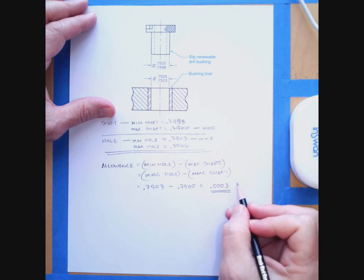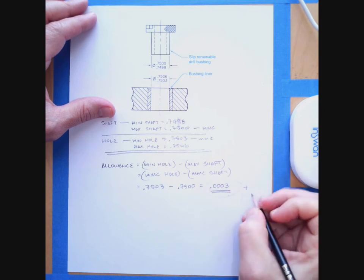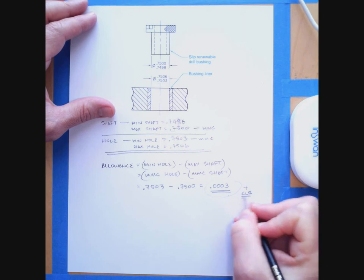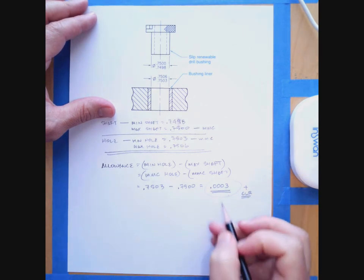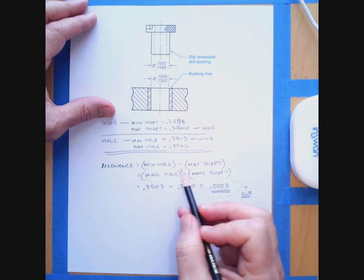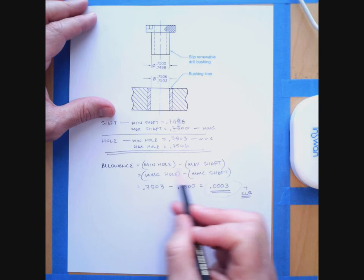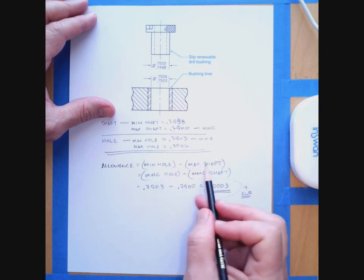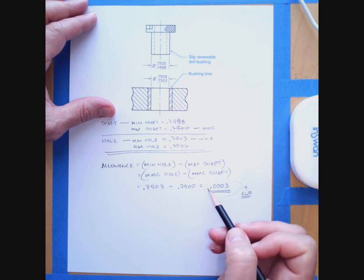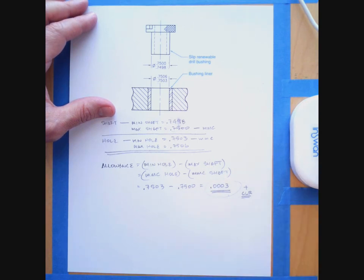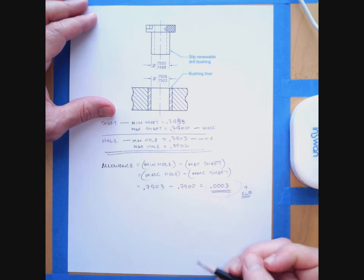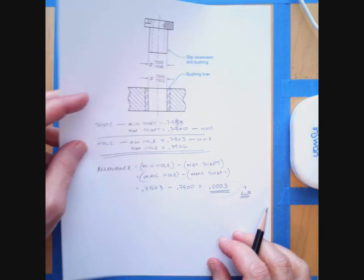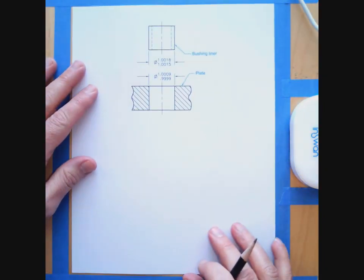The fact that this is a positive number tells us that we have a clearance condition. If this were a negative number, that would mean the hole was smaller than the shaft — you get a negative number if the hole value is smaller than the shaft value — and so that would be an interference condition. That's the first example. Let's move on to the second example.